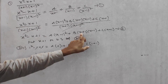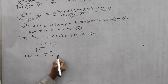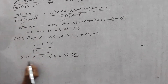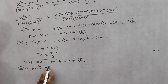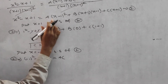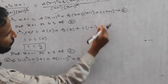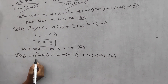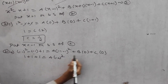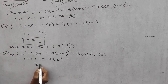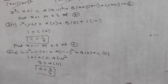Next, put x = -1 in equation 2: (-1)² - (-1) + 1 = A(-1-1)² + B(0) + C(0). The B and C terms become 0. So 1 + 1 + 1 = A(-2)², which gives 3 = 4A, and therefore A = 3/4.